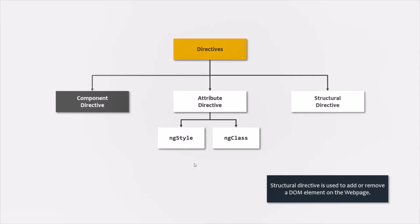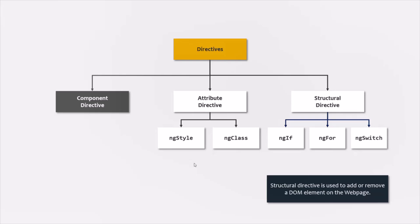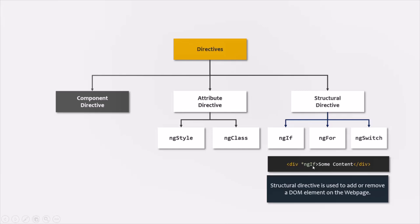Next, we have structural directives. Structural directives can change the DOM layout by adding and removing DOM elements — they manipulate the DOM by adding or removing elements from the web page. Just like attribute directive, structural directive also does not have a template. Some of the built-in structural directives available in Angular are ngIf, ngFor, and ngSwitch. One important thing to keep in mind is that whenever we use a structural directive, before that directive we use an asterisk. For example, when we are using the ngIf directive, before that directive we use an asterisk. This simply tells Angular that the directive is a structural directive and it is going to manipulate the DOM by adding or removing DOM elements. We will talk about structural directives and these built-in structural directives in great detail in our coming lectures.